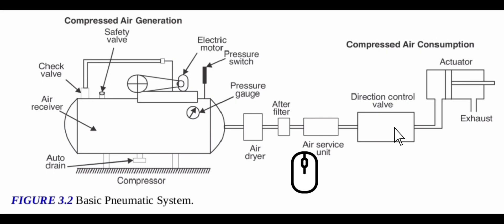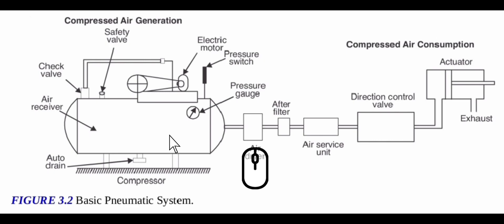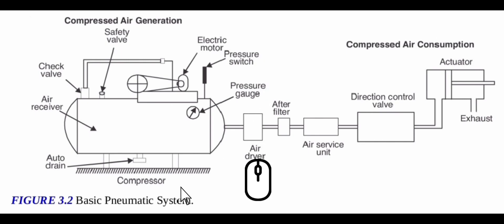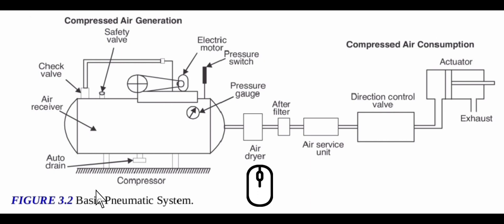Pneumatic systems use pressurized air to make things move. A basic pneumatic system consists of an air generating unit and an air consuming unit. Air compressed in a compressor is not ready for use — the air has to be filtered, the moisture present in air has to be dried, and for different applications in the plant the pressure of air has to be varied. Several other treatments are given to the air before it reaches finally to the actuator. Figure 3.2 gives an overview of a basic pneumatic system; some accessories are added for economical and efficient operation of the system.